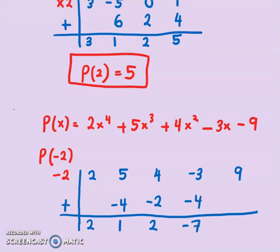Add them: -3 + (-4) = -7. -7 times -2 is 14. Sorry, I forgot minus here. Just be careful. -9 here. Now -9 + 14 is 5.